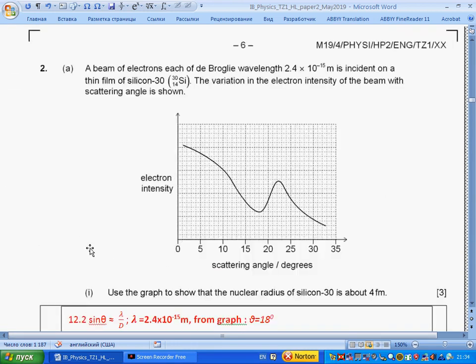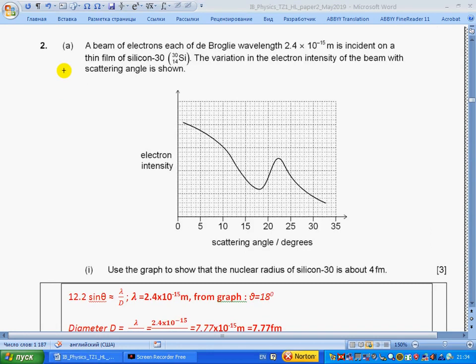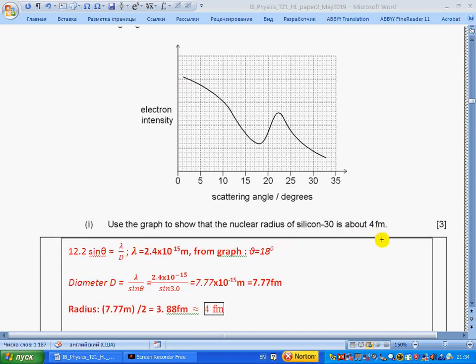Question 2, part a: A beam of electrons, each of de Broglie wavelength, is incident on silicon-30. The variation in electron intensity of the beam with scattering angle is shown. Use the graph to show that the nuclear radius of silicon-30 is about 4 femtometers. Section 12.2: formula for minimum, theta equals lambda over D. The minimum is found here at 18 degrees. Rewriting this formula for diameter, we get 7.77 femtometers, and then radius will be two times less, so about 4 femtometers.